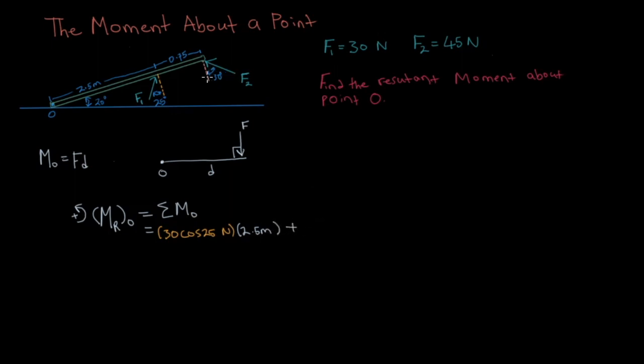Plus this force, or I should say this force, the perpendicular component which would be 45 times cos 30 newtons. And then we're going to multiply that by the moment arm. So the distance from the origin is going to be 2.5 meters plus 0.75 meters.